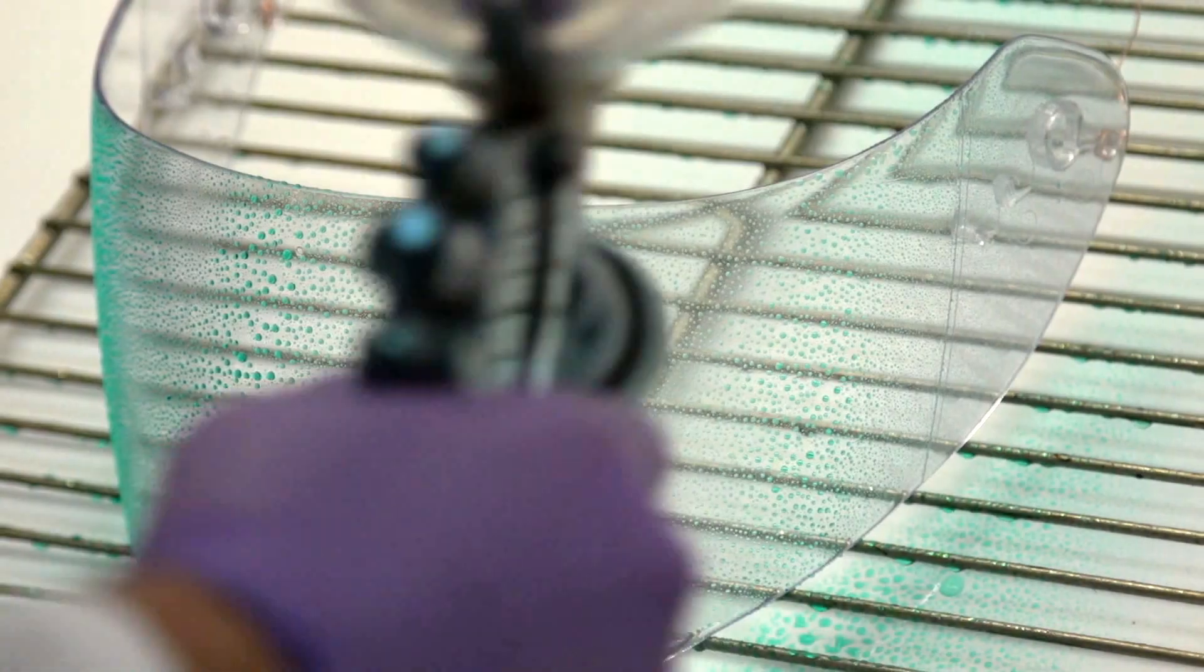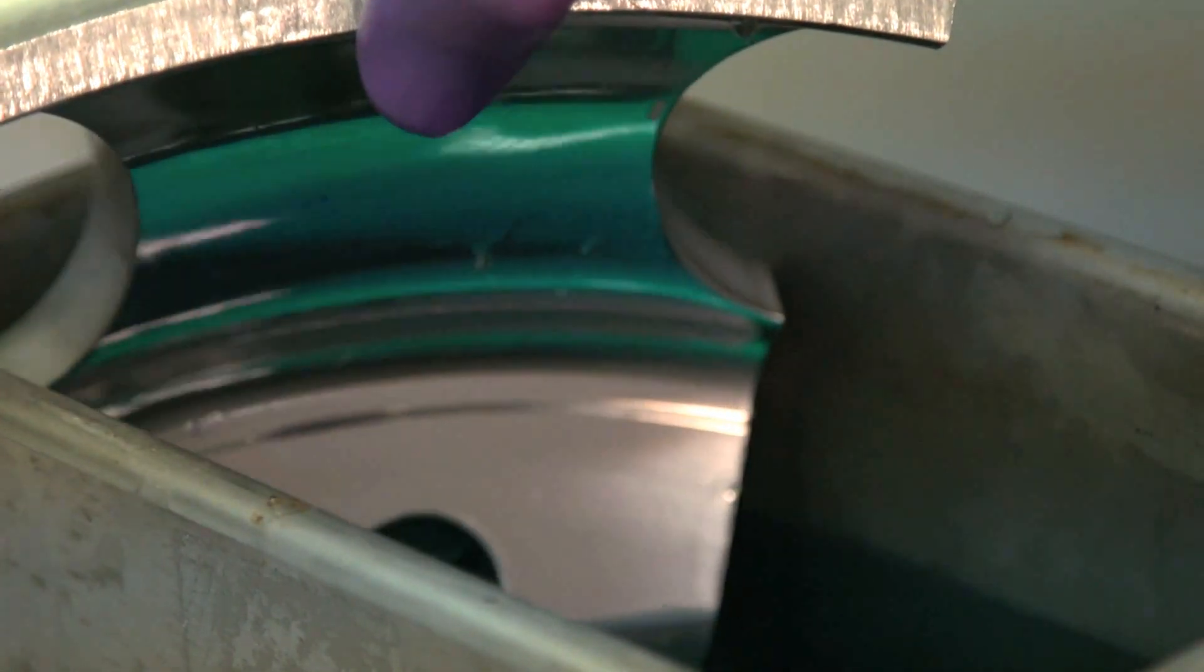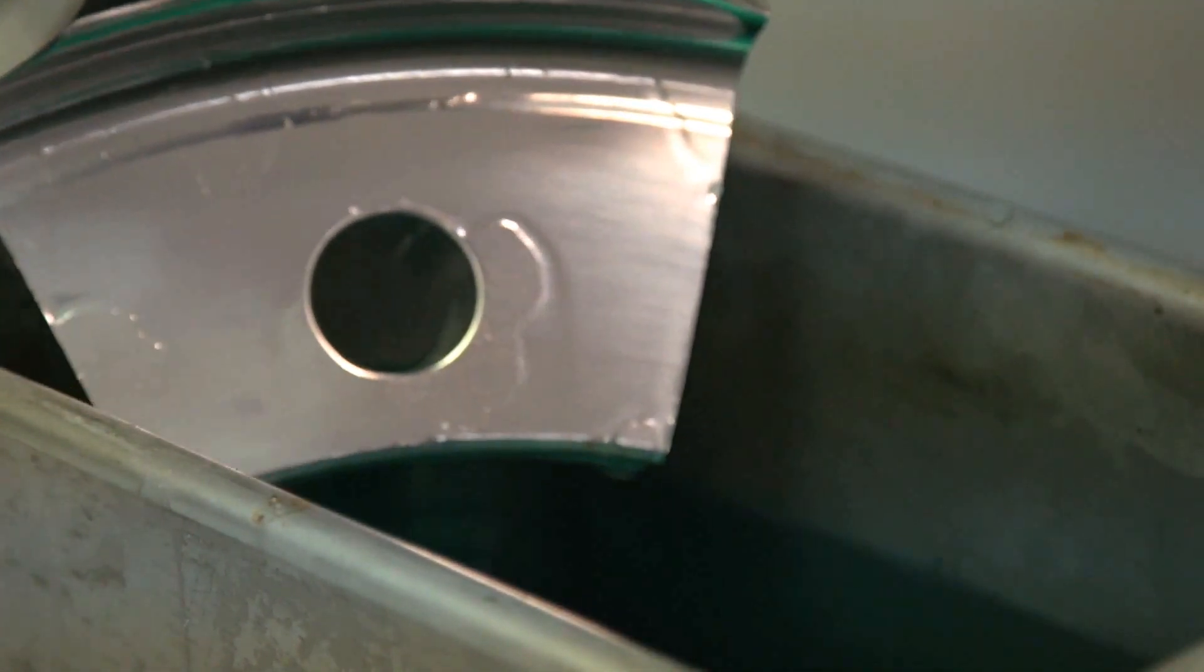Common application methods for Aculon's coatings are dipping, wiping, or spraying, allowing the creation of a customized, easily implemented, and extremely scalable solution for your specific needs that will require little to no upfront capital investment.